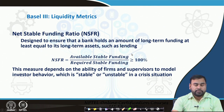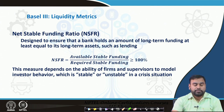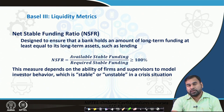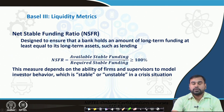They have also suggested the net stable funding ratio, which is designed to ensure that banks hold an amount of long-term funding at least equal to their long-term assets such as lending. The NSFR is calculated as available stable funding divided by the required stable funding, which should be greater than or equal to 100 percent — whatever is available should be matched with the required stable funding of the bank. This basically depends on the ability of funds and supervisors to model investor behavior, which can be stable or unstable in a crisis situation.